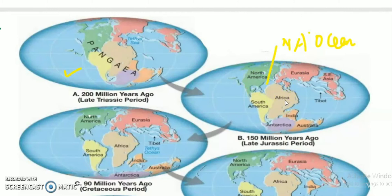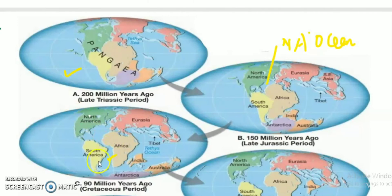Then we have the formation of the South Atlantic Ocean. It is in between South America and Africa. So that was North America and Africa, and now South America and Africa — together forming the whole Atlantic Ocean.